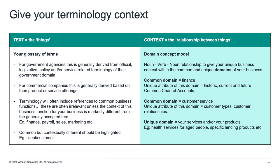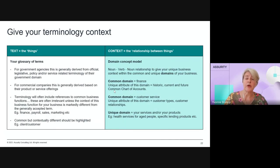A concept model is generally done at a domain level — you can do it at an organisation level, but breaking it down to a domain is really useful. A glossary of terms usually exists within the document to cover terms used in the document. But if you're trying to create context of the business or domain you want to affect some change in, that glossary is highly likely to be derived from legislation, policy, or service-related terminology for government agencies, or from product and service offerings for commercial companies. The whole reason for promoting a concept model is that while it might be a common domain, it allows you to surface the things that might be unique within that common domain.